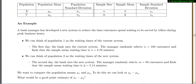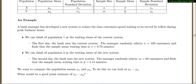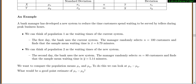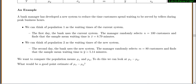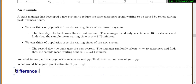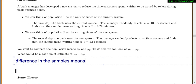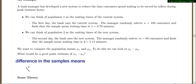Our ultimate goal is not just to look at the sample means, but to compare the population means — mu-X and mu-Y. To do this, we look at the difference mu-X minus mu-Y. A good point estimate of that difference would be the difference in the sample means, X-bar minus Y-bar. That would be our best estimate for the difference in the population means.